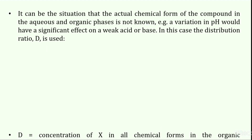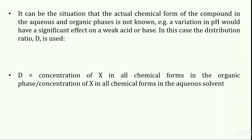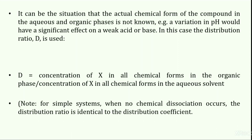There can be a situation where the actual chemical form of the compound in the aqueous and organic phases is unknown. In that case, distribution ratio is used. The distribution ratio is the ratio of the concentration of all species of the solute in each phase. In practical applications, when we are concerned with the fraction of the total solute present in one or other phase, it is convenient to use the distribution ratio D, which equals the concentration of X in all chemical forms in the organic phase divided by the concentration of X in all chemical forms in the aqueous phase. For simple systems where no chemical dissociation occurs, the distribution ratio is identical to the distribution coefficient.